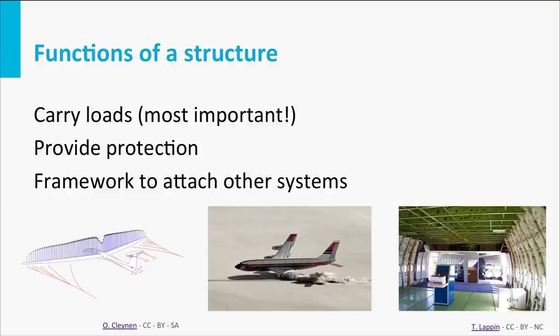The second picture illustrates the protection function. Passengers, crew, and cargo should be protected against all kinds of hazards, like crashes or less severe impact of hailstones. Protection is also needed against the cold environment, like a temperature of minus 60 degrees Celsius at cruise altitude of 11 kilometers. The last picture shows the third function: the capacity of the aircraft structure to provide attachment points for many other systems. In the case of aircraft, these are hydraulic and electrical systems, isolation blankets, etc.